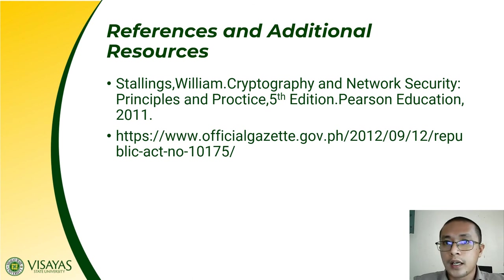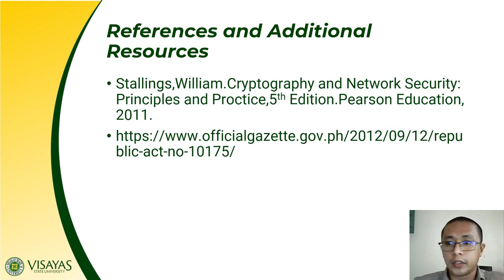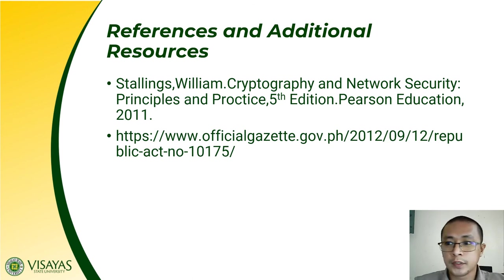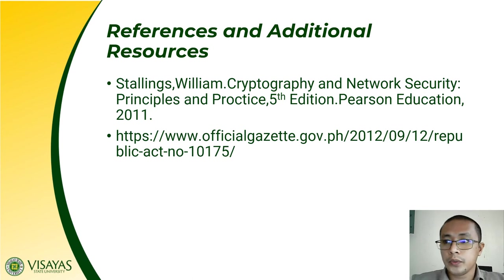Make sure not to violate any of these offenses as enumerated, otherwise you will be held liable. In this lesson, we learned the different intellectual property rights — copyright, trademark, and patent. We also learned the US Digital Millennium Copyright Act, the different resources prone to copyright violation such as software, databases, and algorithms, and the different acts punishable by RA 10175 or the Cybercrime Prevention Act of 2012. Thank you, and have a good day.